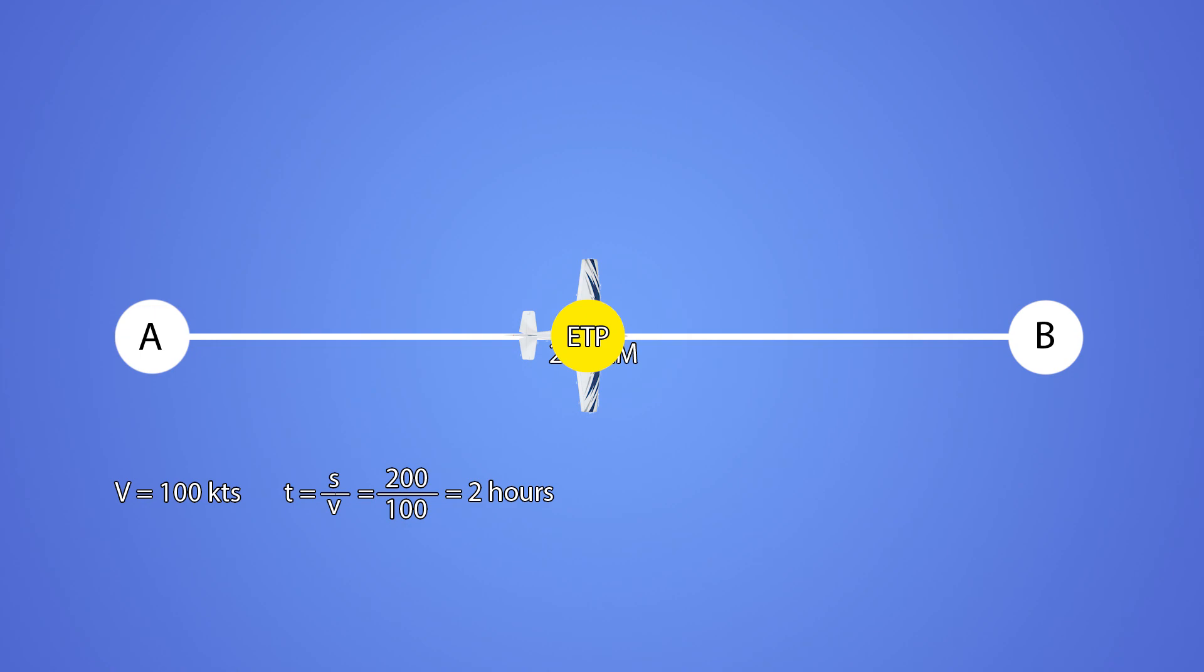For simplicity, let's say the wind is a pure tailwind, 270 at 30 knots. Observe that the equal time point in this case would shift to the west. This is because we have tailwind traveling east and a headwind traveling back west. So where exactly is the equal time point in this case?